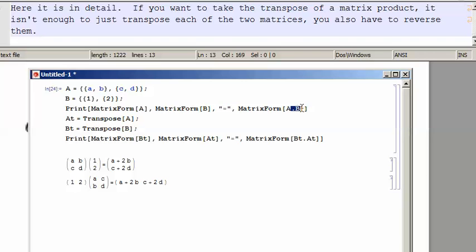Here it is in detail. If you want to take the transpose of a matrix product, such as A dot B, it isn't enough just to transpose each of the two matrices. You also have to reverse the order of the multiplication.